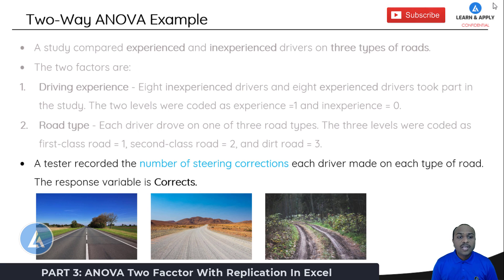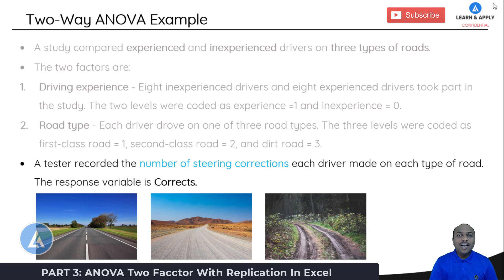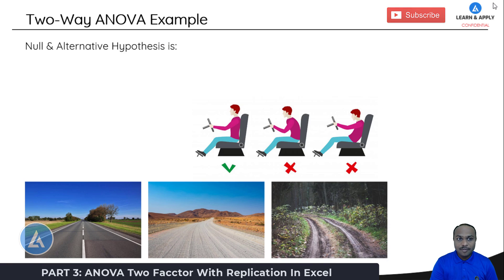A tester recorded the number of steering corrections each driver made on each type of road. The response variable is the number of corrections. Before performing two-way ANOVA in Microsoft Excel, the first step is to identify the null hypothesis and the alternative hypothesis.